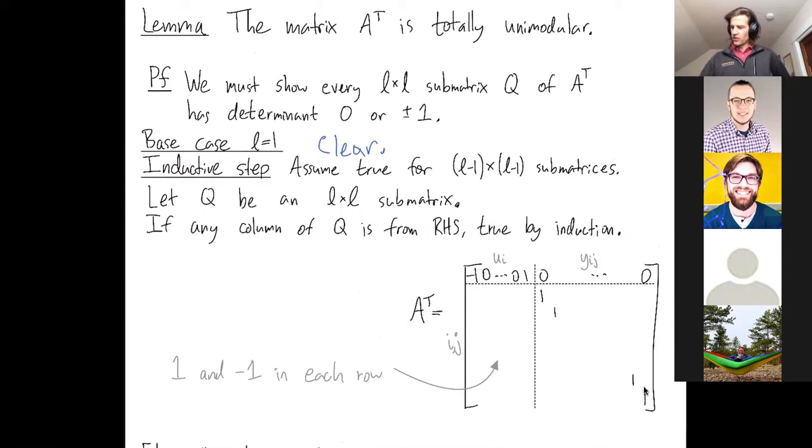I'm going to think of splitting A transpose into two halves. The half to the right of this blue line and the half to the left of this blue line. If you have a column of Q that's on the right half, right, then that column contains all zeros except for a single one. So just do matrix cofactor expansion along that column and then the determinant of the submatrix Q is plus or minus one times everything else. Everything else is just a smaller submatrix. So by induction we know that determinant is plus or minus one or zero. So in the case that you have a column from the right hand side we're done by induction.